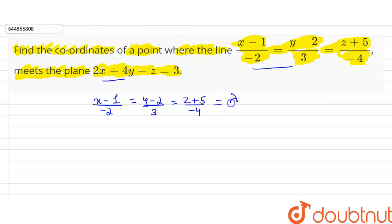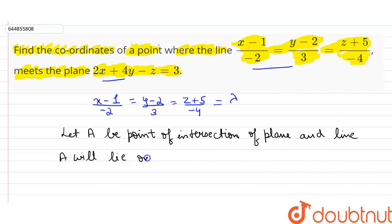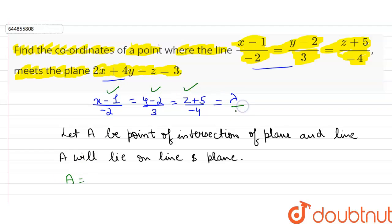We let this equation of line equal to lambda. We let A be the point of intersection of the plane and line. If A is the point of intersection, A will lie on the line as well as the plane. For the coordinates of A, we will equate each term equal to lambda and find the corresponding values of x, y, and z. So if we equate (x-1)/(-2) = lambda,